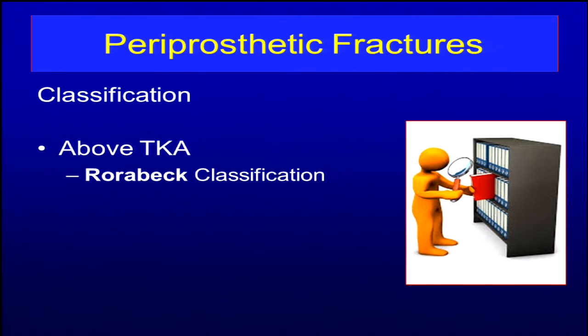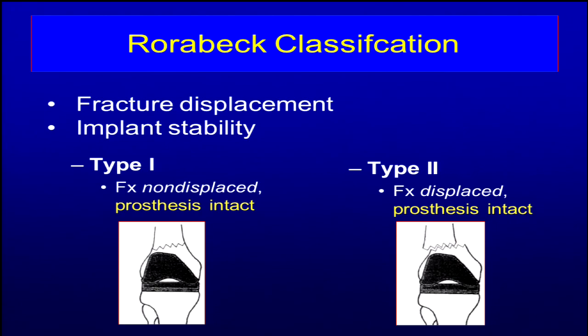The Rohrabach classification system is used for periprosthetic distal femur fractures above a knee replacement. It has some utility, but it's pretty intuitive and you don't really need to be quoting the classification system per se — you just need to understand what it says. There are three types. Type 1 is the non-displaced fracture with an intact, stable prosthesis. This is a very rare entity and I really don't remember seeing a non-displaced distal femur fracture any time in the recent past.